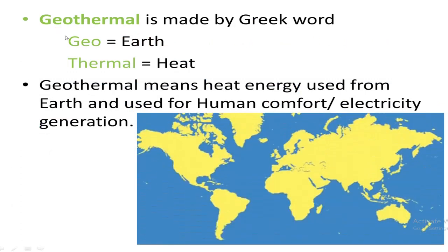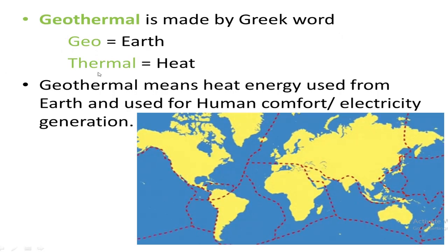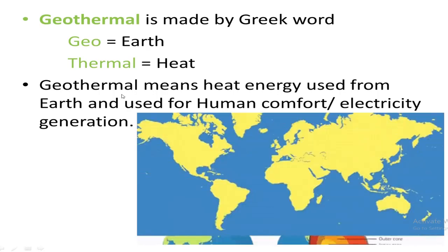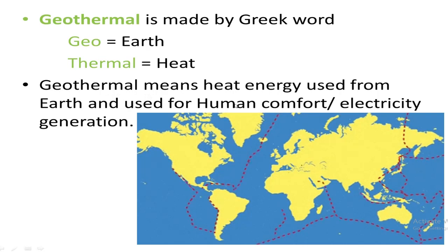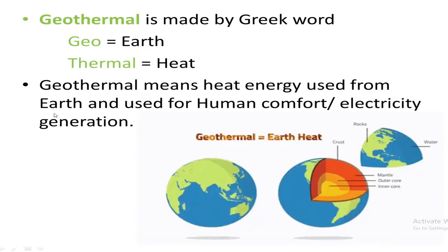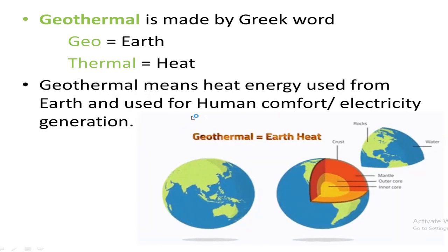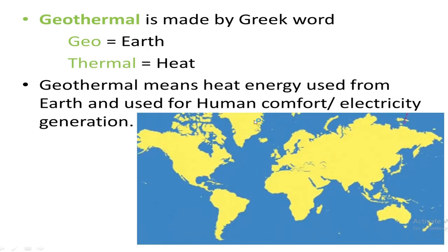The word 'geothermal' is made from Greek words. 'Geo' means earth and 'thermal' means heat. When we combine both words, we get the definition: the heat energy used from the earth that is useful for human comfort — for example, to produce electricity.